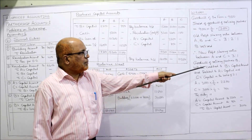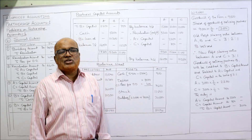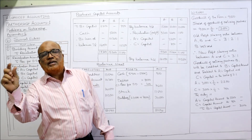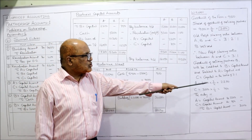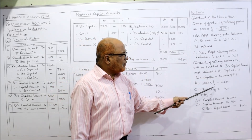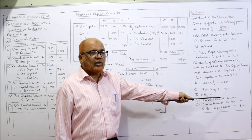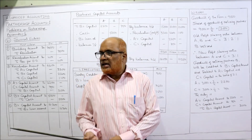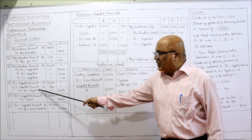The goodwill of retiring partner B (3,000) will be credited to B's capital account and debited to A's capital and C's capital in the ratio of 3:1. So 3,000 × 3/4 = 2,250 for A, and 3,000 × 1/4 = 750 for C. Entry: A's capital account debit 2,250, C's capital account debit 750, to B's capital 3,000. Being the goodwill due to retiring partner B adjusted in the capital accounts.